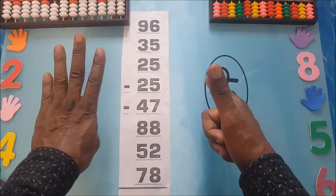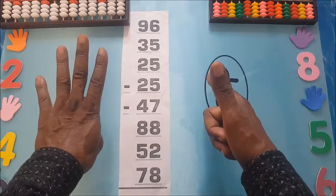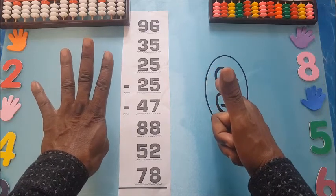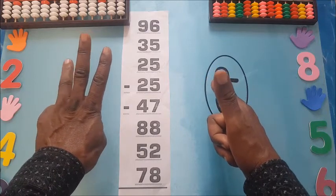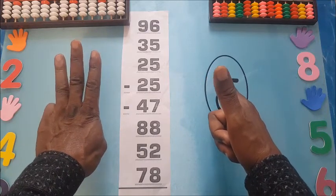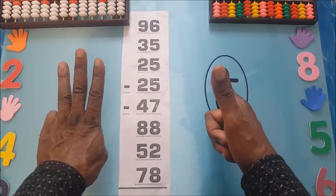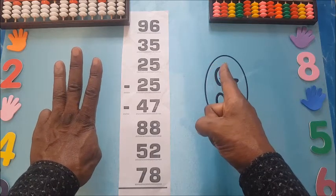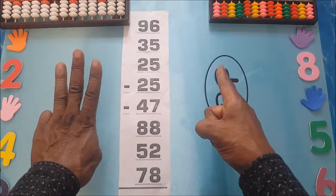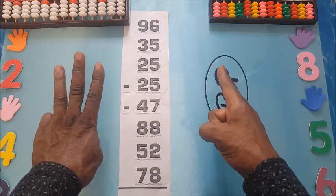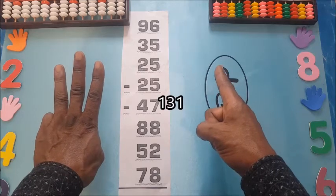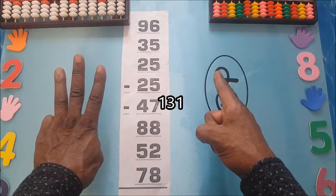156, take away 25. I'll be counting backwards since it's subtraction: 10, 20, 20, minus 5. So I'm back to 131.